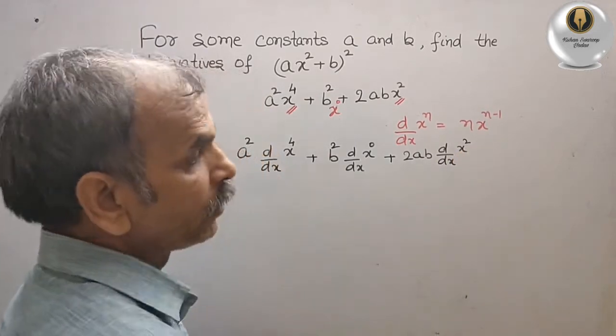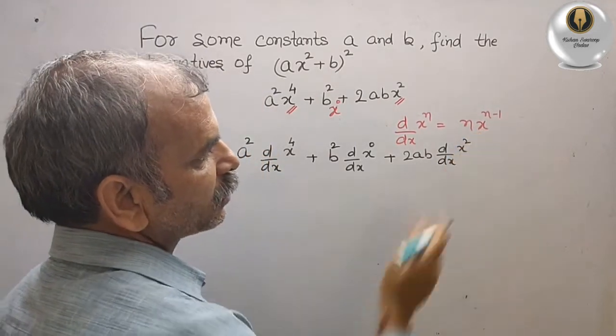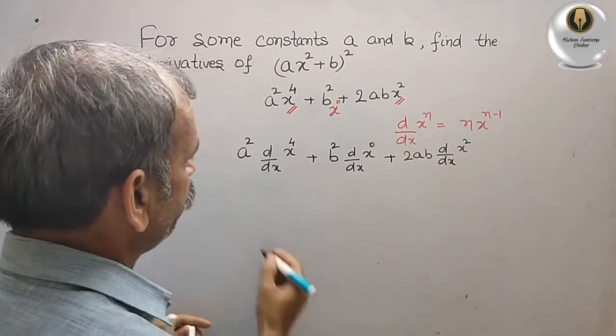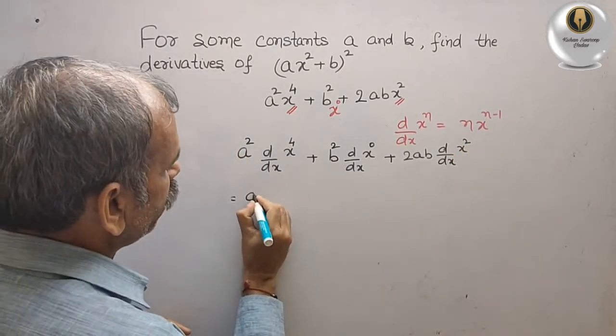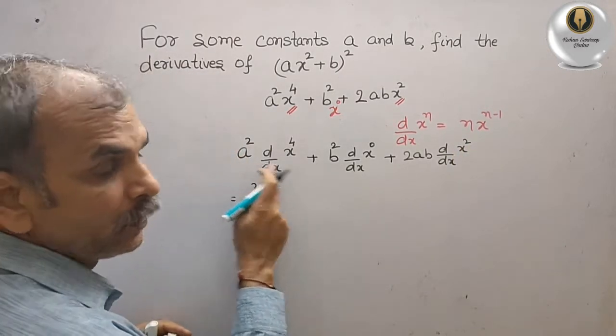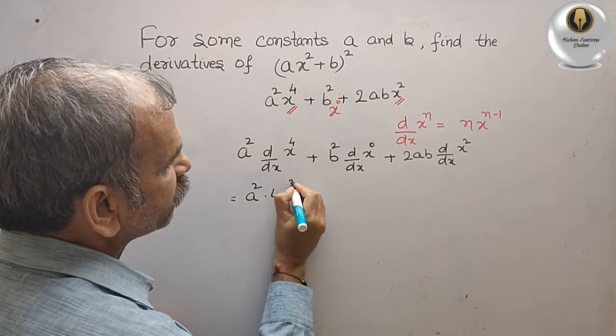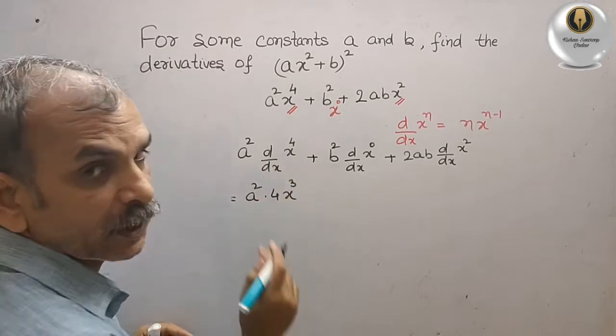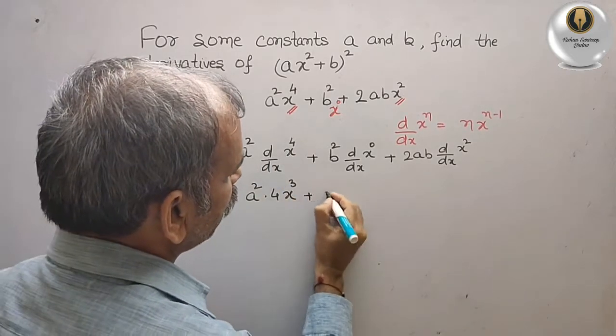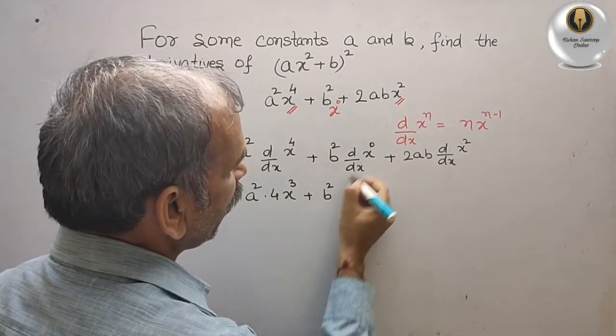Now try to solve by this equation. What we will get? We will get a², then 4x to the power of 3 (4 is there, 3), plus b² and 0.